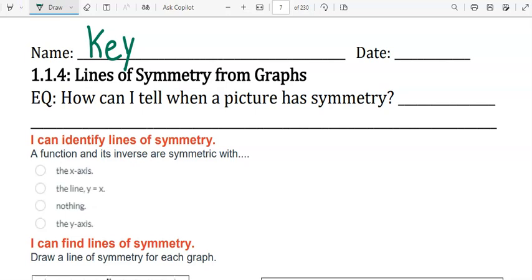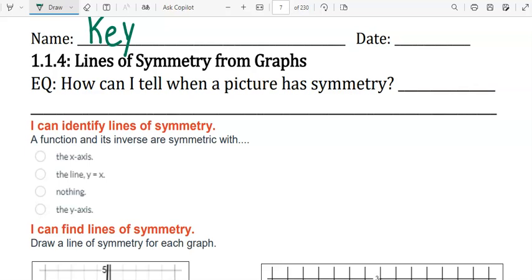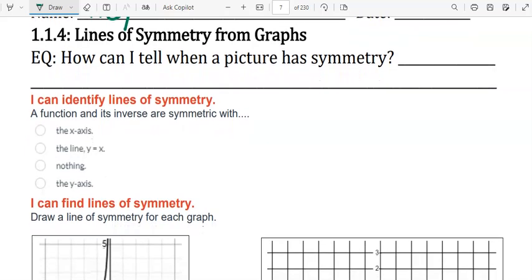1.1.4 Lines of Symmetry from Graphs. Essential question: how can I tell when a picture has symmetry? I can identify lines of symmetry. A function and its inverse are symmetric with the line y equals x.